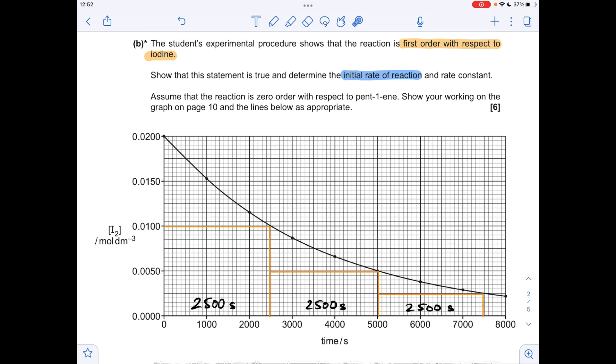So the first one is explaining why the reaction is first order with respect to iodine. So the way I've done that is calculated three half-lives. So the time it takes to go from 0.02 moles per decimetre cubed down to 0.01, so the concentration's fallen by half. What's the time period for that? 2,500 seconds. And then I've calculated the time period to go from 0.01 to 0.005. So that's another two and a half thousand seconds. And the next halving is another two and a half thousand seconds.